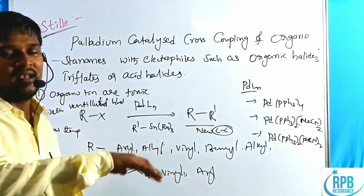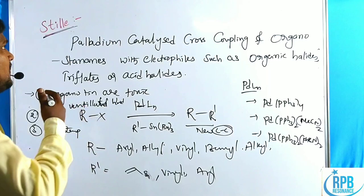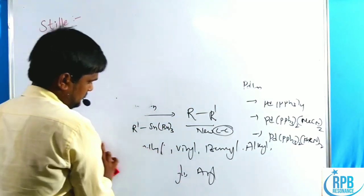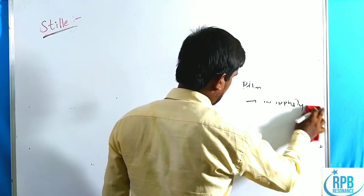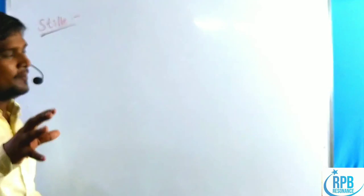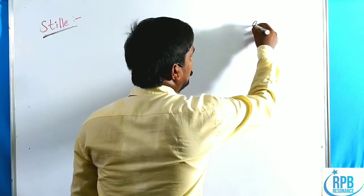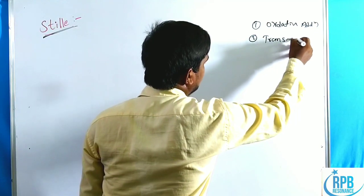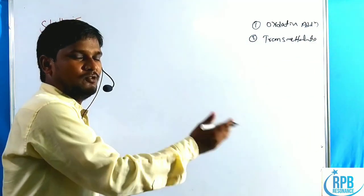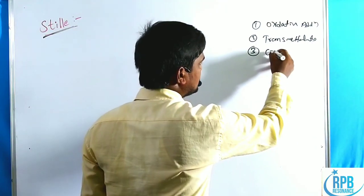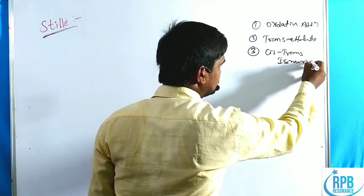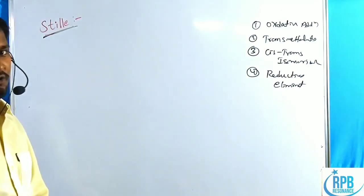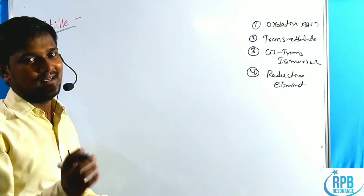Let us discuss the mechanistic pathway — the Tolman cyclic pathway — of the Stille cross-coupling reaction. The catalytic cycle proceeds through four steps: first, oxidative addition; second, transmetalation (alkyl groups transfer from the stannous group to palladium, i.e., one metal to another); third, trans-cis isomerization; and fourth, reductive elimination.